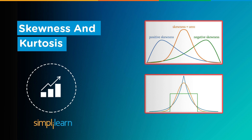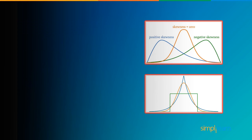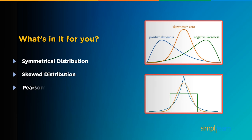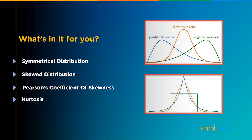Welcome to Simply Learn's YouTube channel. In today's world, data is becoming increasingly important, and entire professions are dedicated to studying, understanding, and manipulating data. In this session, we will discuss how to calculate the distortion in the normal curve using skewness and kurtosis. We will start by understanding symmetrical distribution, then move on to skewed distribution and Pearson's coefficient of skewness, and finally discuss kurtosis.